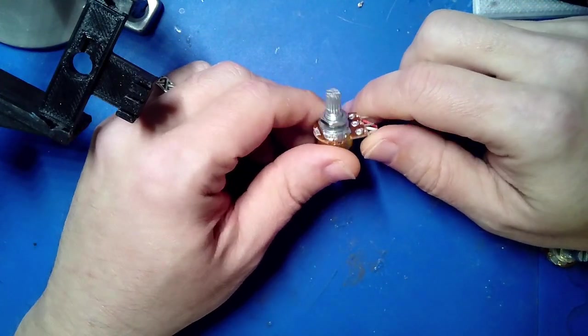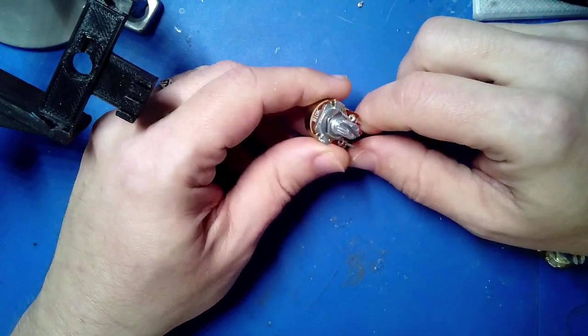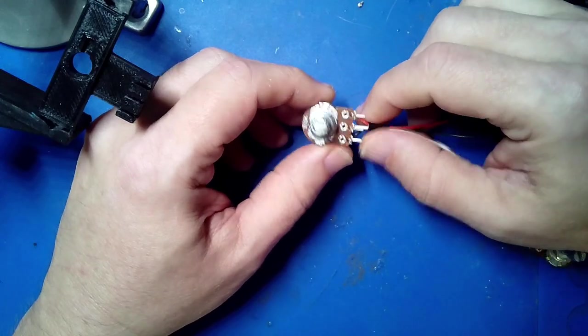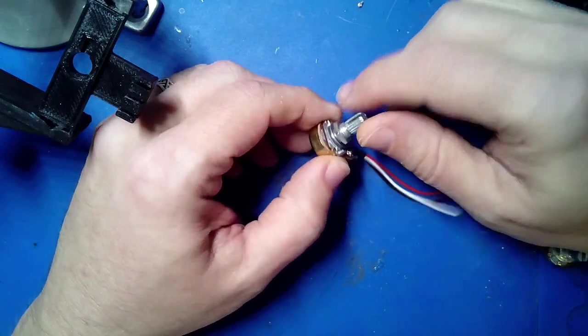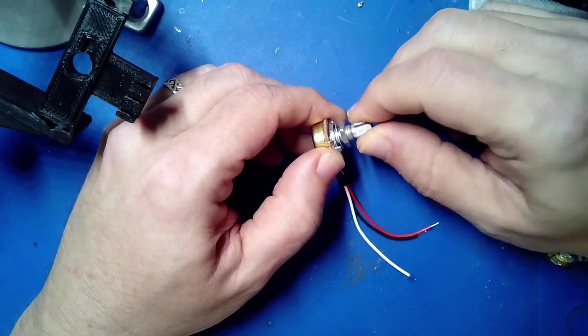Here we have a standard potentiometer that you'll see all the time. This happens to be a 10k pot, and it's a physical device that changes resistance as you turn it.